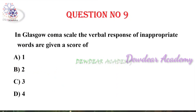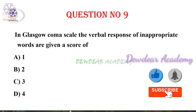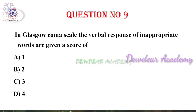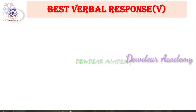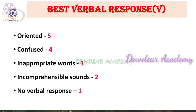Question number nine: In Glasgow Coma Scale, the verbal response of inappropriate words is given a score of — options: one, two, three, four. The right answer is three. There are three components in GCS: best eye response, best verbal response, and best motor response. In best verbal response: oriented scores five, confused scores four, inappropriate words scores three.